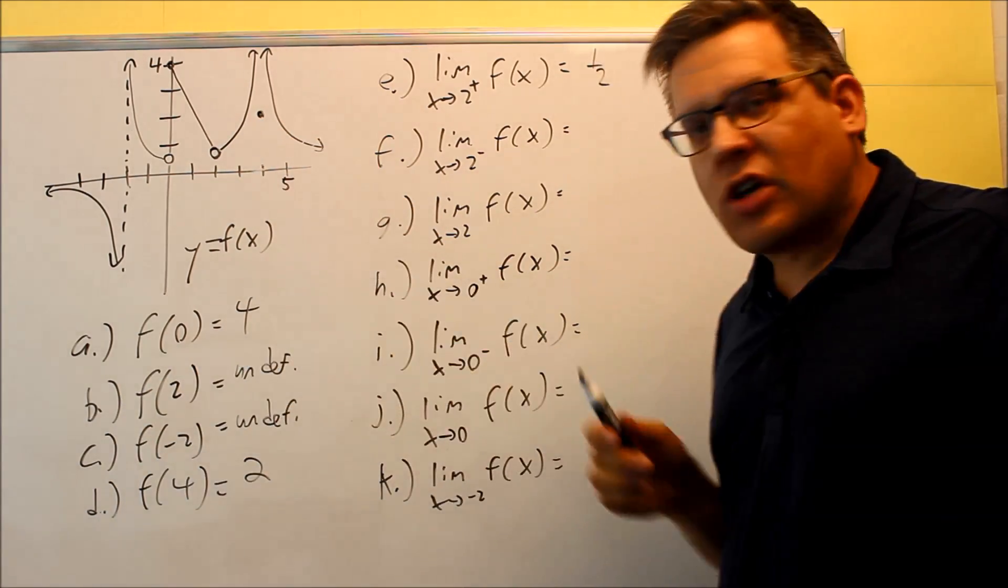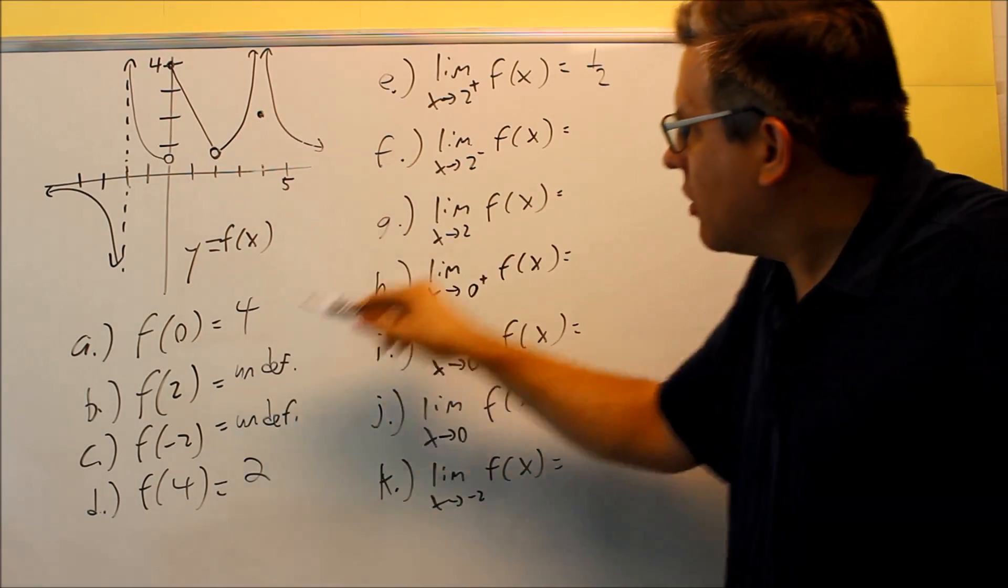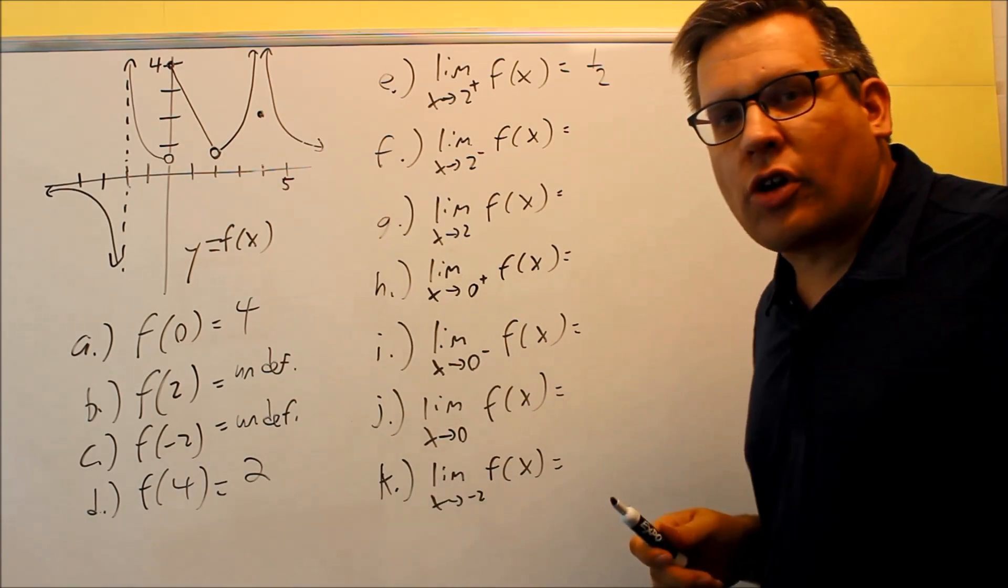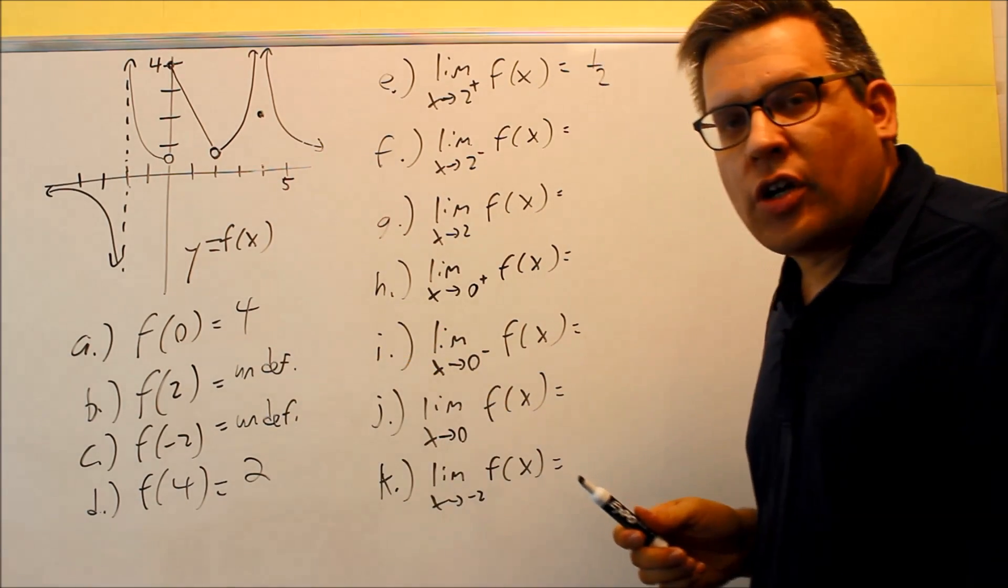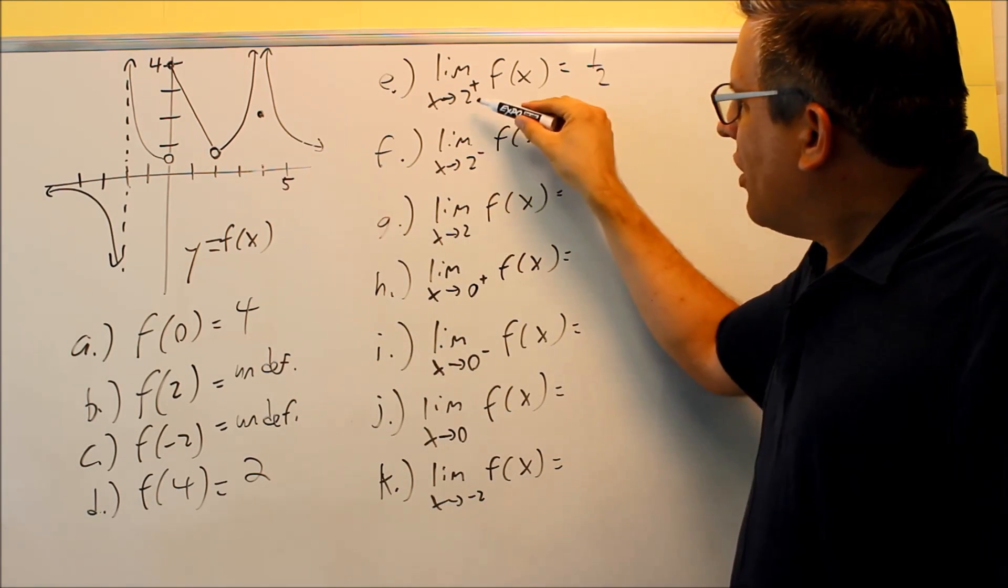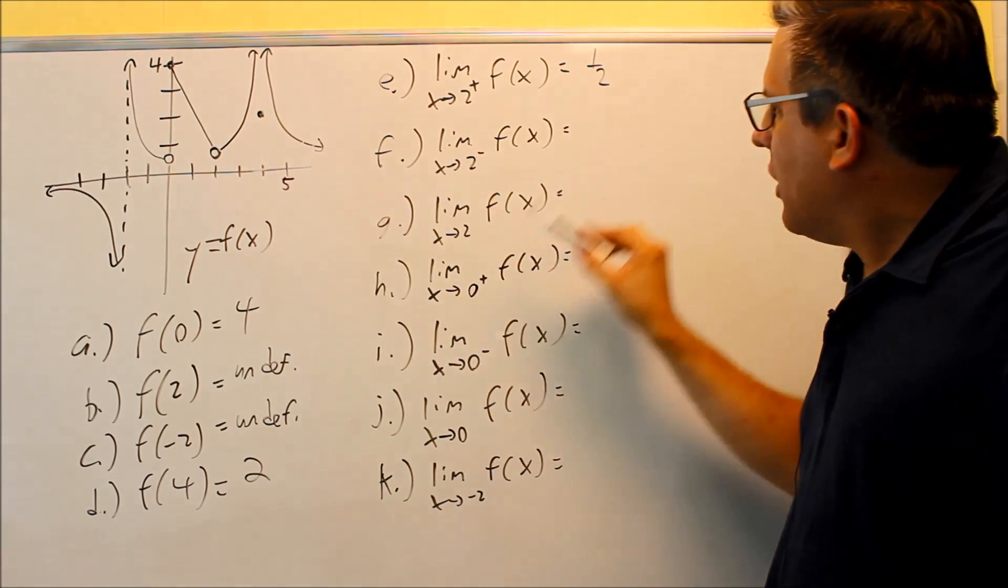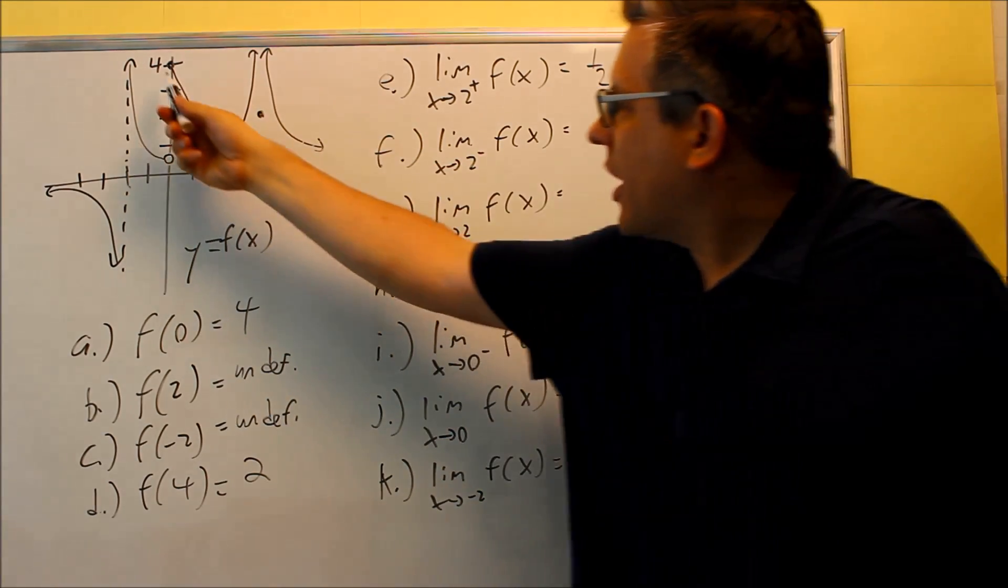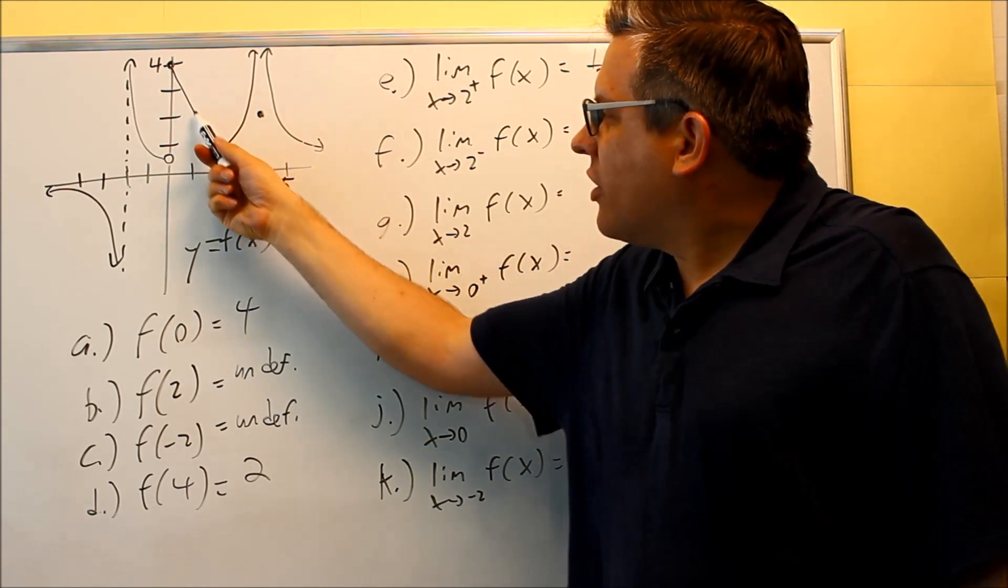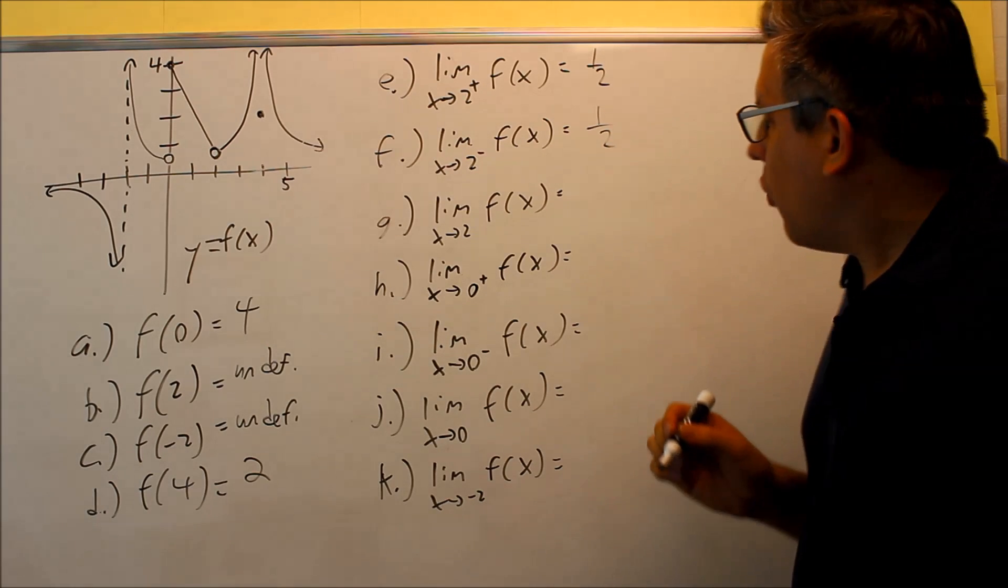We couldn't do f(2) - it was undefined. However, we are able to do it here because these are asking two different things. One's asking for a limit, one's asking for an actual value you're reading off the graph. Be careful we don't want to confuse those. As you approach two from the positive side it approaches one half. If I approach two from the negative side, that means I'm on this straight piece here. As I'm following that, that's going to go with the same value also, one half.